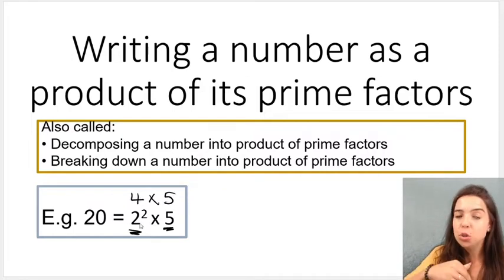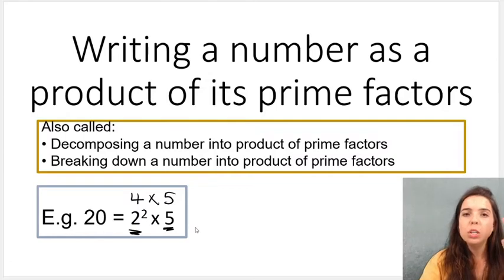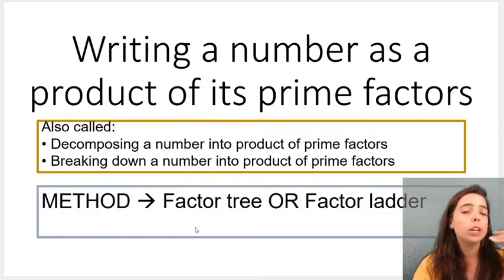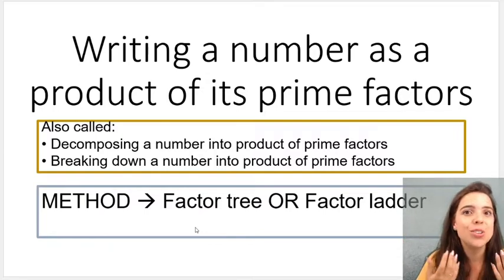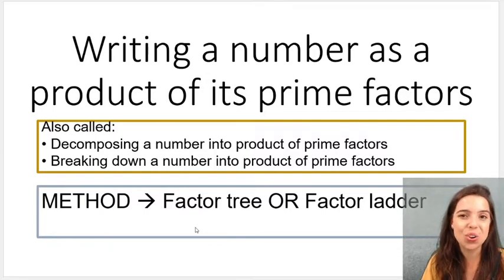Now, we can get this 2 to the power of 2 times 5 using two methods. We can do a factor tree or a factor ladder. And when you're in grade 9, you're allowed to use your calculator as well, which I will show you.